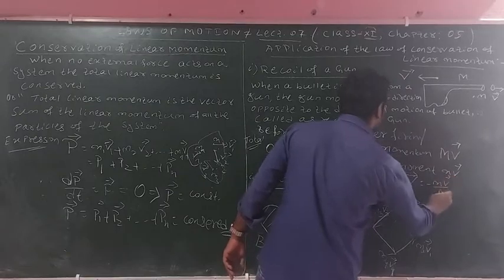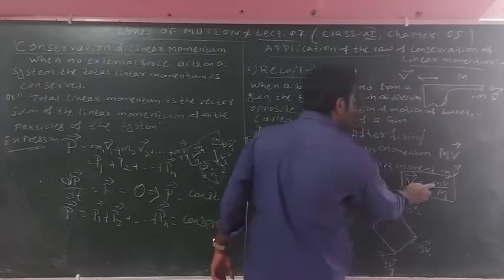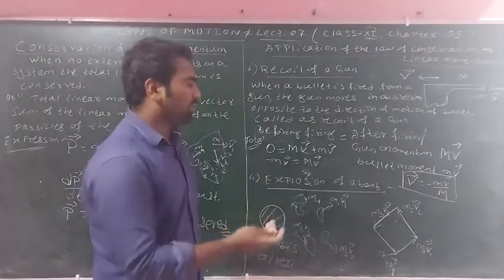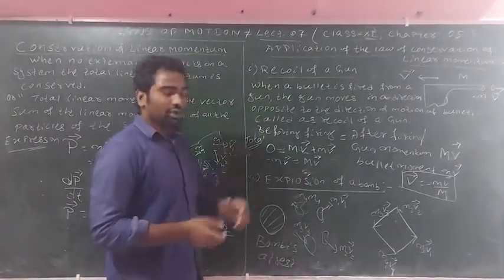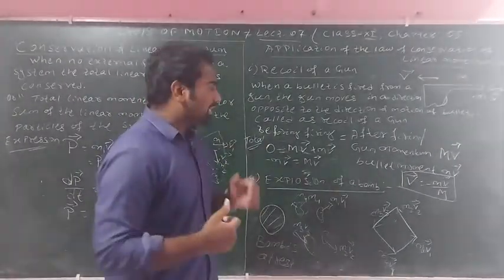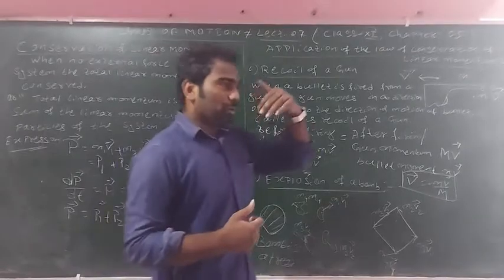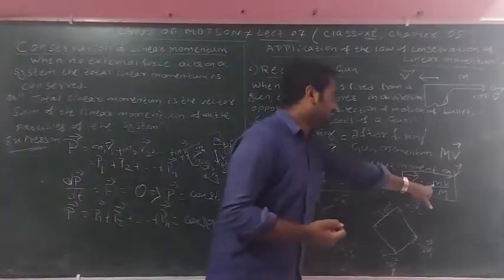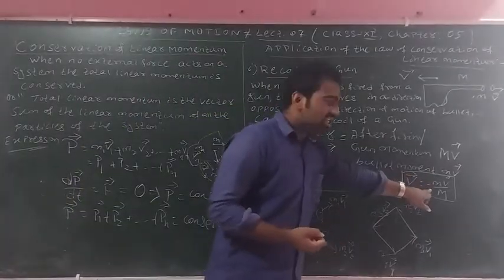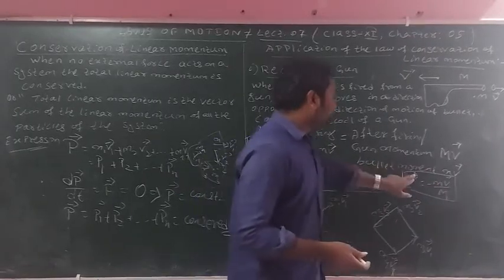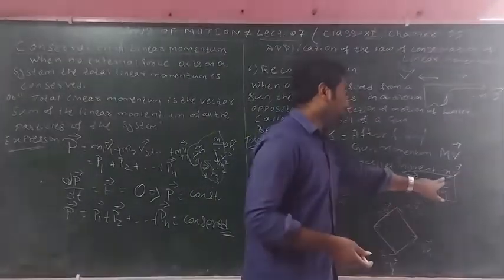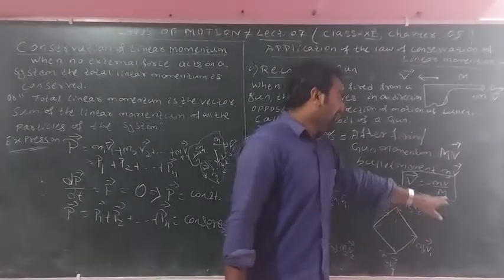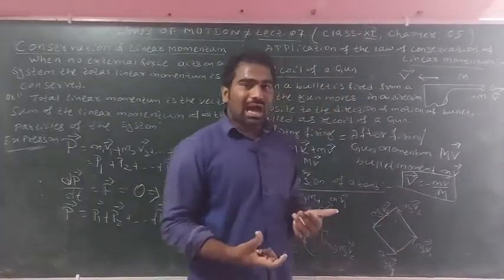Rearranging: V equals minus mv divided by M. The negative sign indicates the gun moves in the opposite direction to the bullet — this is the recoil velocity of the gun.